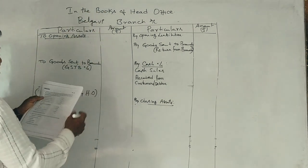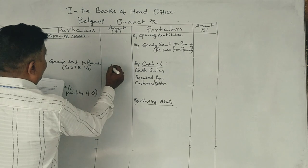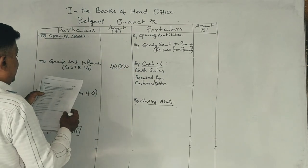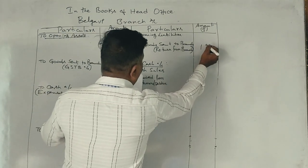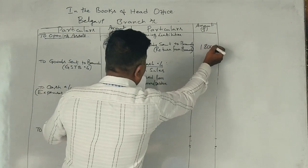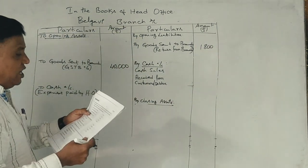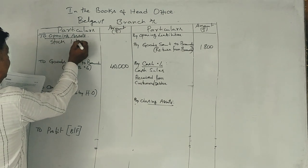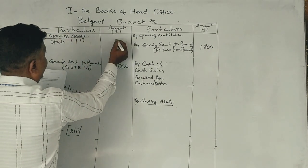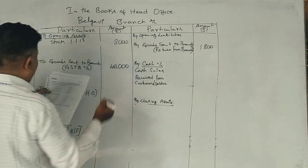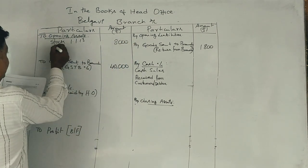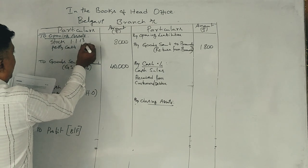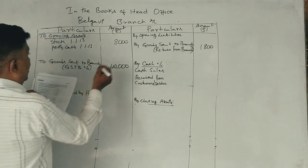First, goods sent to the branch: 40,000. Goods returned by branch: 1,800. Stock at branch on 1-1-13: 8,000. Petty cash: 500. Petty cash on 1-1-13: 250.